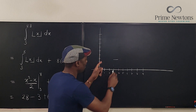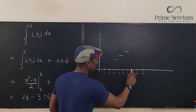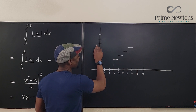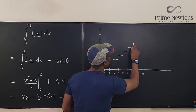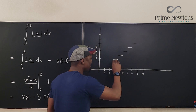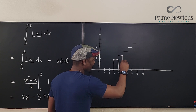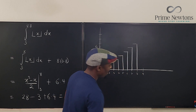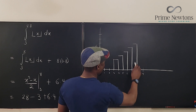The floor from 4 to 5 starts at 4, then from 5 to 6, from 6 to 7, and from 7 to 8. Then from 8 to 9, but it does not go all the way to 9 — it goes only up to 8.8. So what you have is a bunch of rectangles. The last one does not go all the way; it stops partway, but the height is 8.